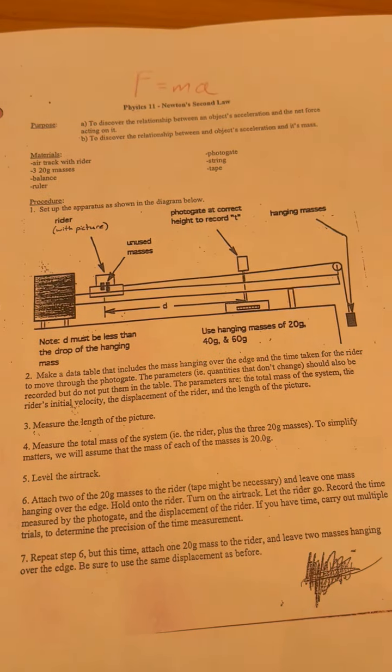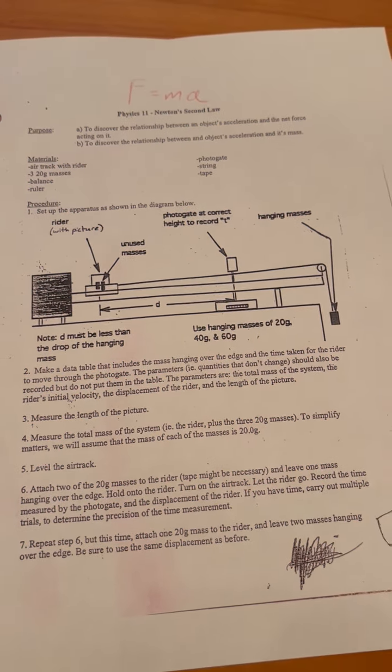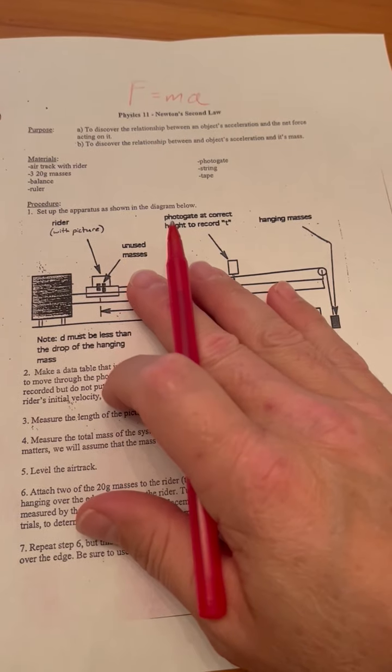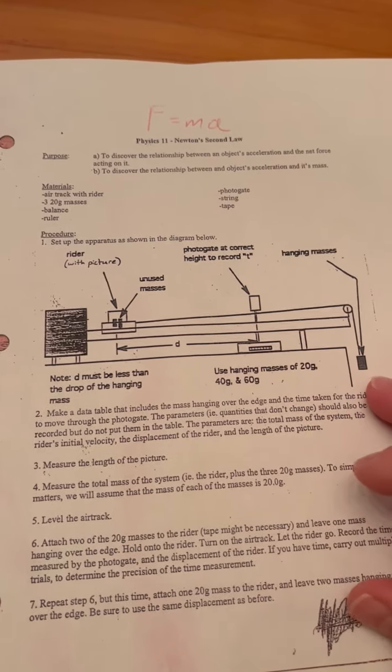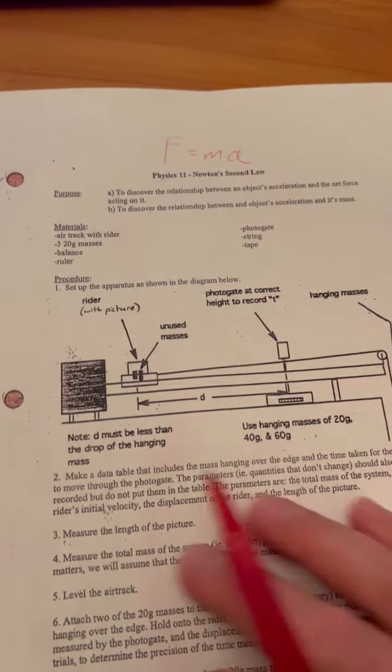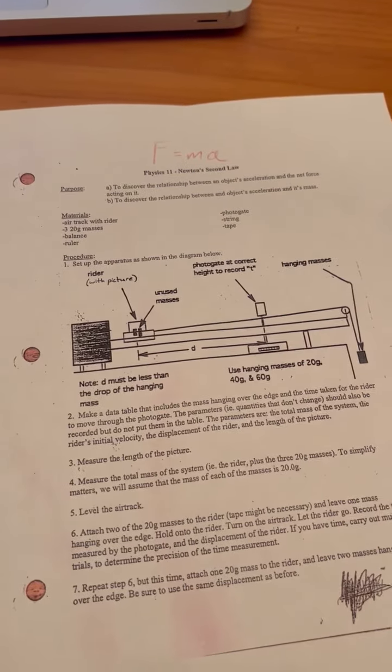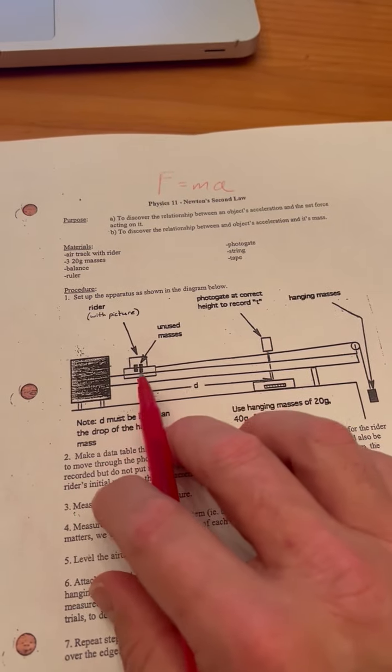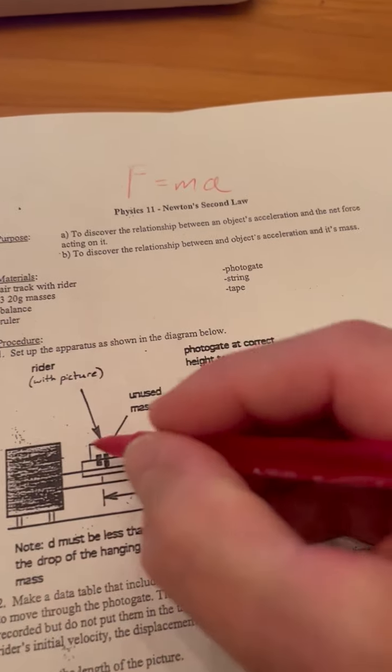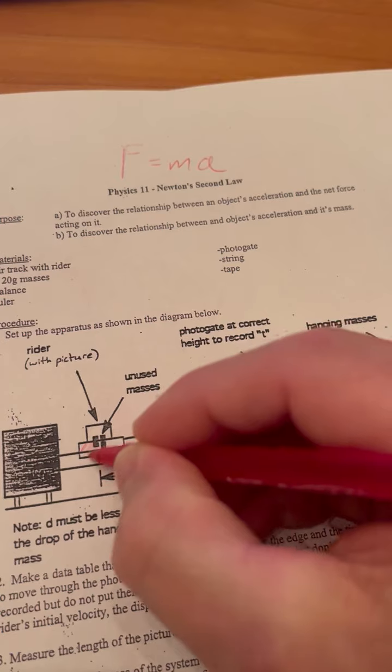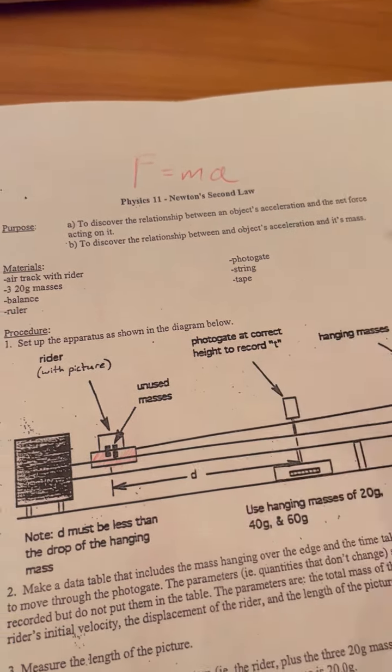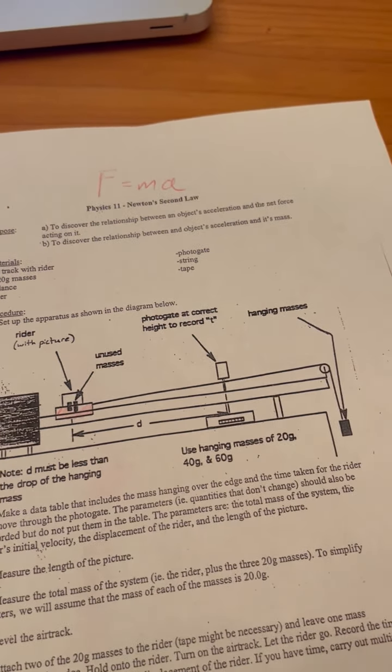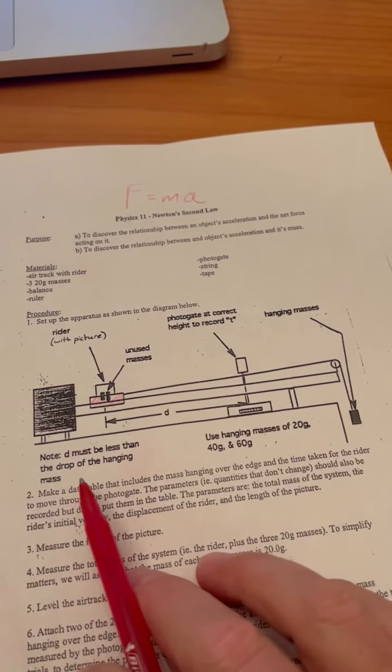You're going to have four of these air tracks, and you're going to set them up. I just said the front of the classroom because I thought that would make the least disturbance, but you can put them anywhere as long as it's not distracting people. You're going to have a rider, that's that red metal thing that you will find in that wooden box on the side of the classroom.